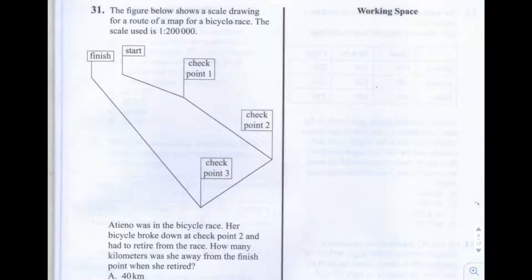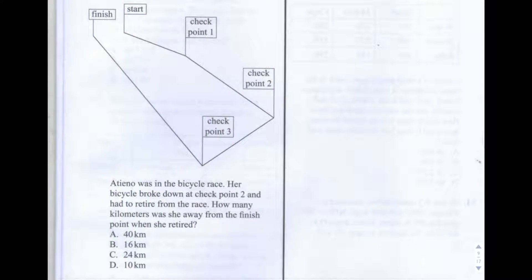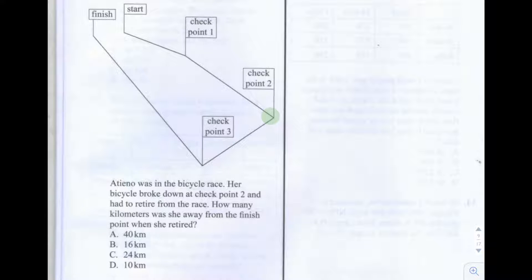This is question number 31 of the 2013 KCPE Maths paper. The figure below shows a scale drawing for a route of a map for a bicycle race. The scale used is 1 to 200,000. Atieno was in the bicycle race. Her bicycle broke down at checkpoint 2, and she had to retire from the race. How many kilometres was she away from the finish point when she retired?